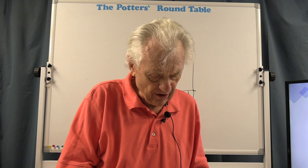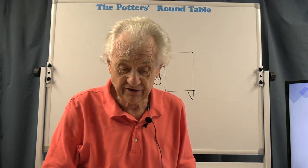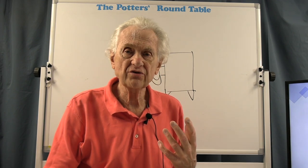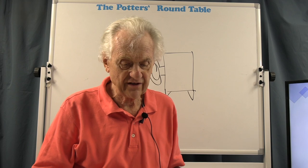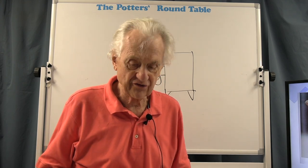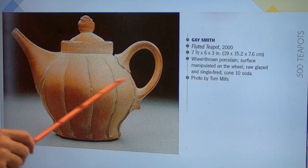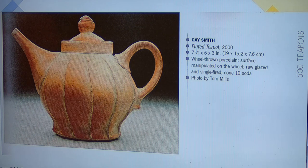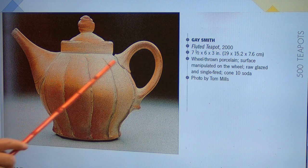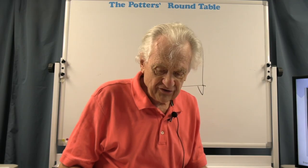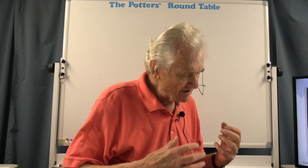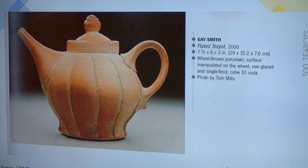Another important point about appearance: since this is going to be a functional teapot, you want the pot to look functional. You want the handles to look strong, and the attachment points to look strong. In this example, the thickness of the handle looks adequate to handle the weight of the teapot, and there are very strong, prominent attachment points — it doesn't look fragile. You also want the teapot to look stable enough, so that when you look at it, it doesn't look like it's going to tip over.